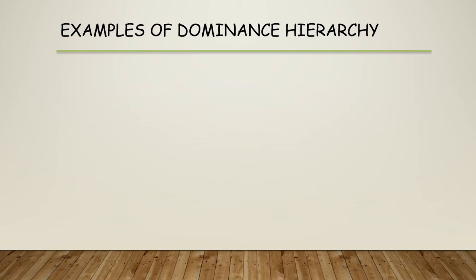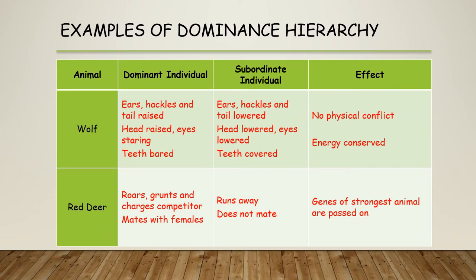We can see examples of dominance hierarchy in both birds and mammals. In the wolf, the dominant individual has ears, hackles, and tail raised, head held high, and bares teeth. The subordinate lowers its hackles and ears, lowers its head and eyes, and covers its teeth. The effect is no physical contact and energy is conserved. In red deer, the dominant male roars, grunts, and charges competitors. The dominant male gets to mate with the females while subordinates run away, and the genes of the strongest animal are passed on.